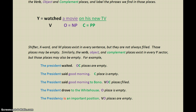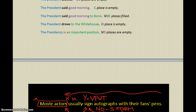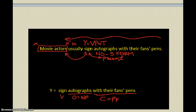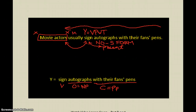So we can see that there are places in a sentence that can be empty. In the Y, the object, the complement, or the verb could be empty at any given Y, but we must have something in the Y-place. For example: 'Movie actors usually sign autographs with their fans' pens.' The Y is sign autographs with their fans' pens — a verb phrase with time. Sign is the verb; autographs is the object — what did they sign? — it's a noun phrase; with their fans' pens is the complement — it's a prepositional phrase.